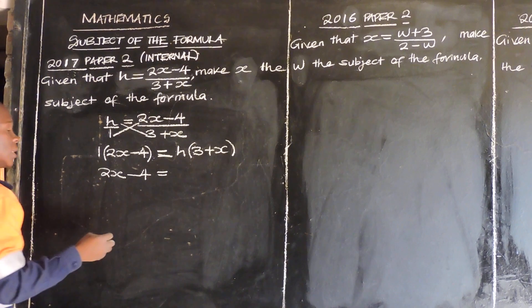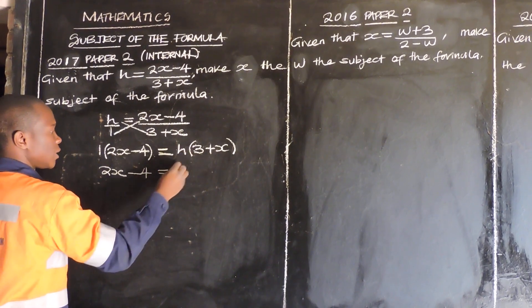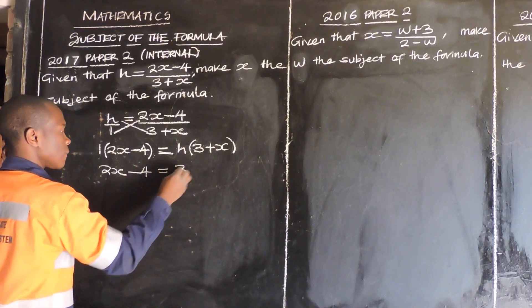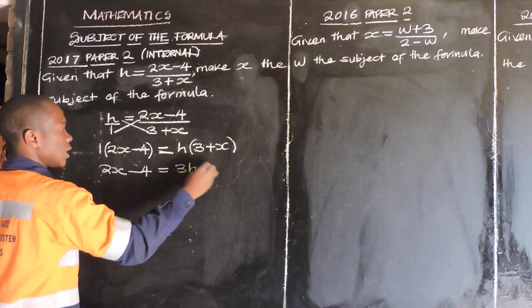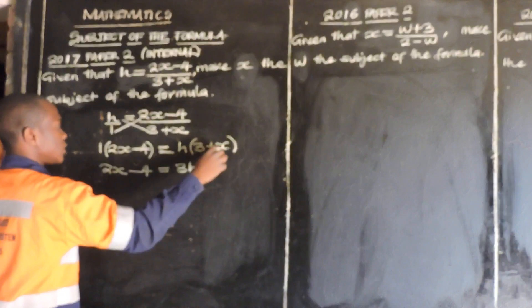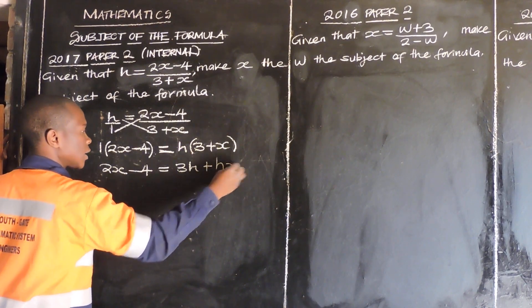Then you multiply the other side and say: h times 3 gives 3h, then plus h times x gives hx.